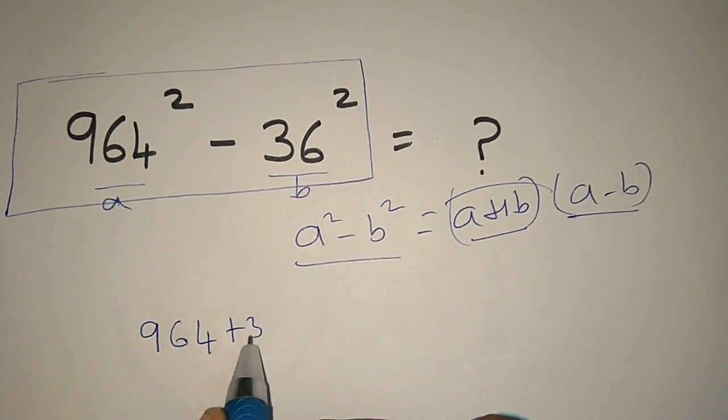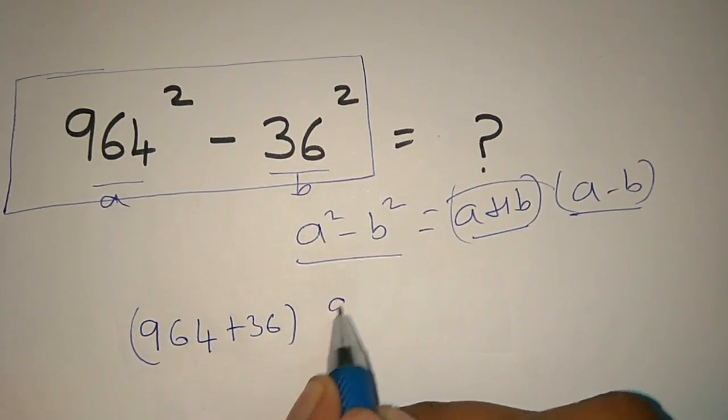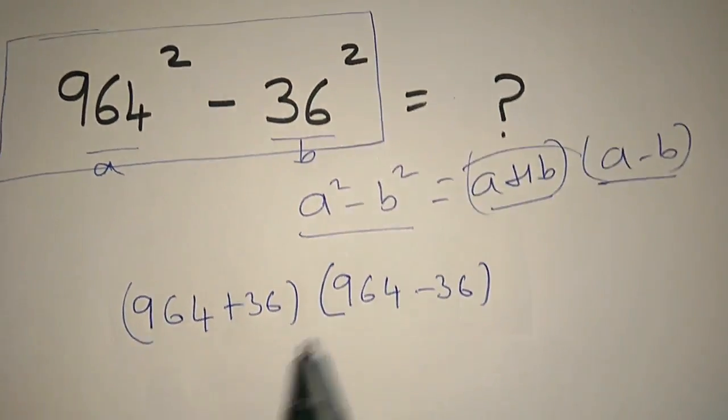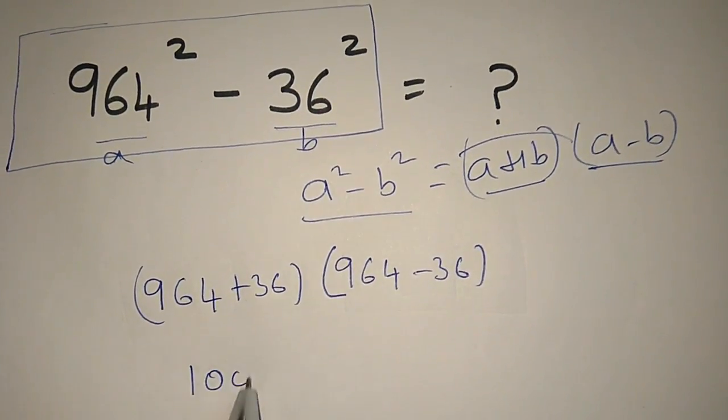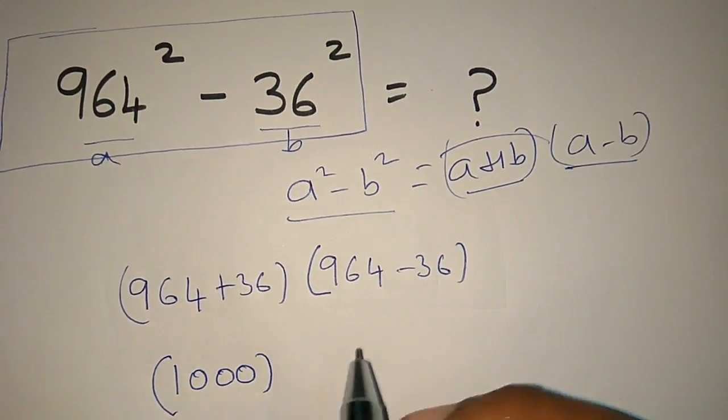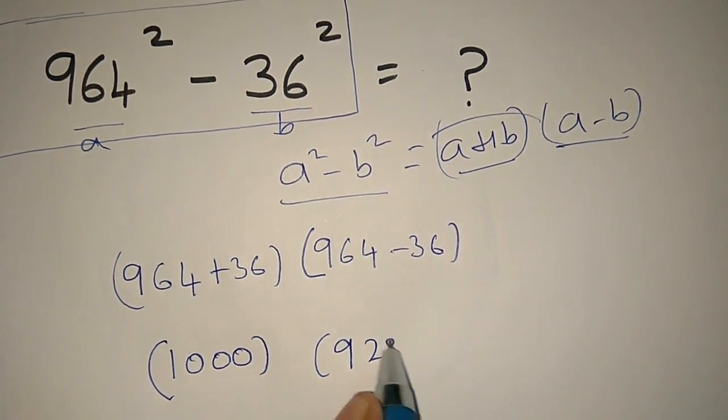So, 964 plus 36, times 964 minus 36. If you add this, it is 1000. If you subtract, it is 928.